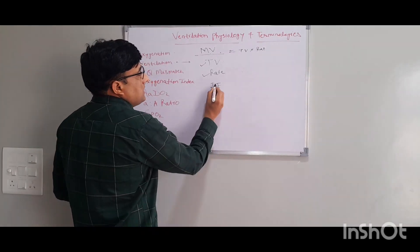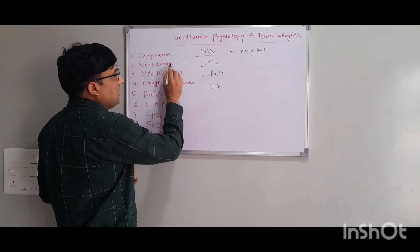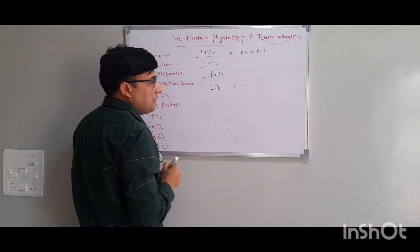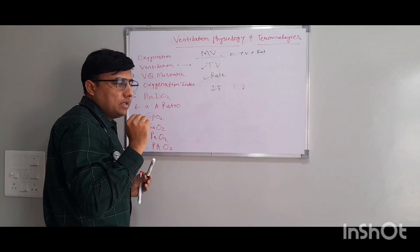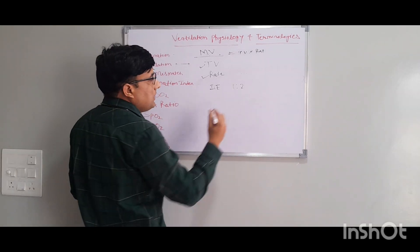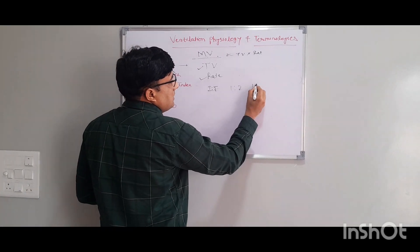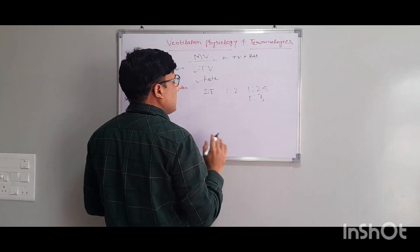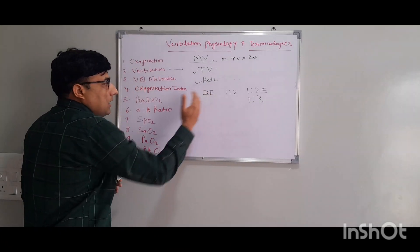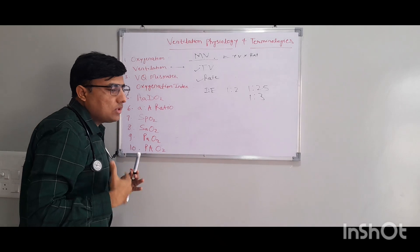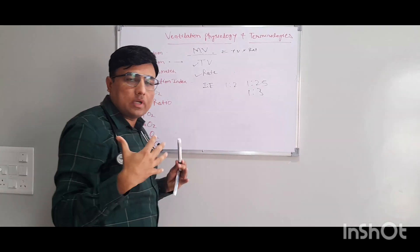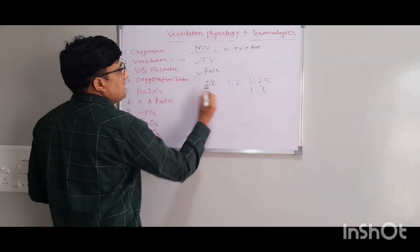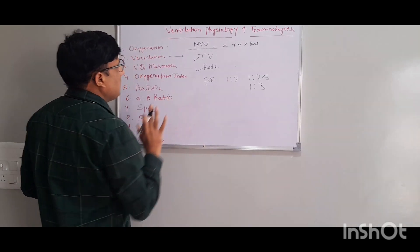The second factor affecting ventilation is the IE ratio. We generally keep the IE ratio around 1:2, but if CO2 is high and you want to increase CO2 washout, we can increase this IE ratio to 1:2.5 or even 1:3. This gives more time to exhale, so that CO2 will wash out. This is about conventional ventilation.